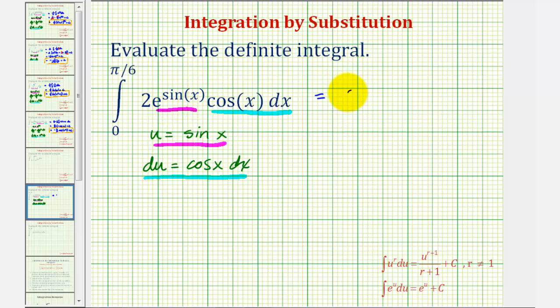Let's factor out the two, and we'd have the integral of e to the u, and cosine x dx is just du. So we'd have two, the integral of e to the u is just e to the u, so we'll have two e to the u.